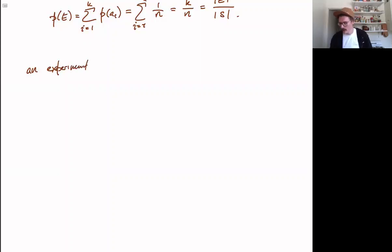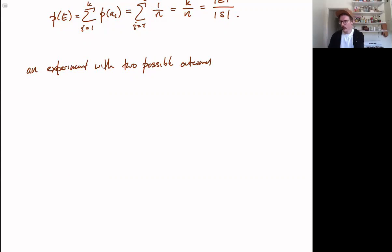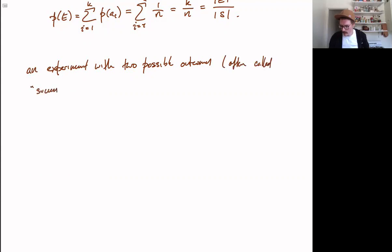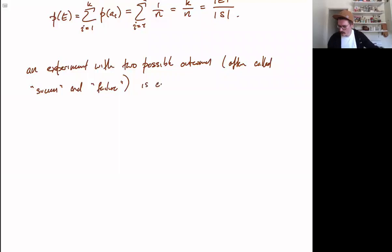An experiment with two possible outcomes, which you can call 1 and 0, or yes and no, et cetera. But let me say they're often called success and failure. So this is called a Bernoulli trial.